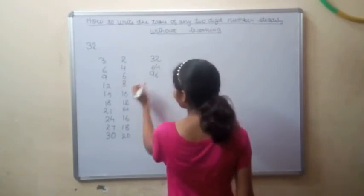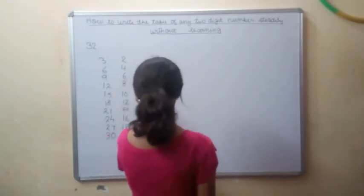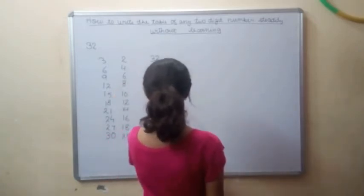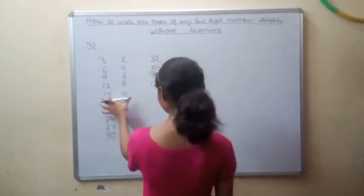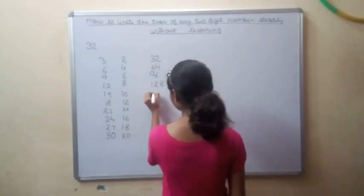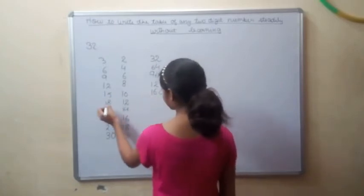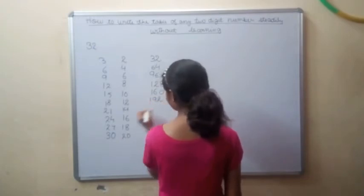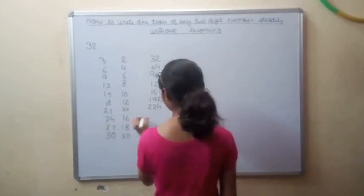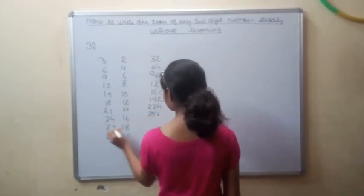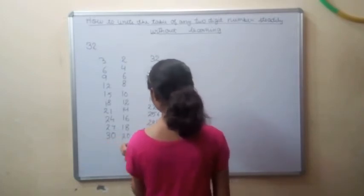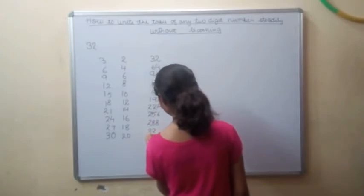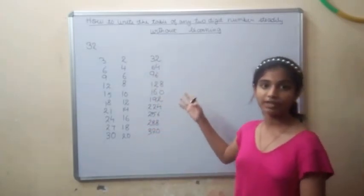And now 12 plus 8. We will write here. We will write this 12 as it is and 8 we will add to it. Now here we will add this. 15 plus 1, 16 and 0 we will write as it is. 18 plus 1, 2, 21 plus 1 and 4, 24 plus 1 and 6, 27 plus 1 and 8, 30 plus 2, 32 and 0.